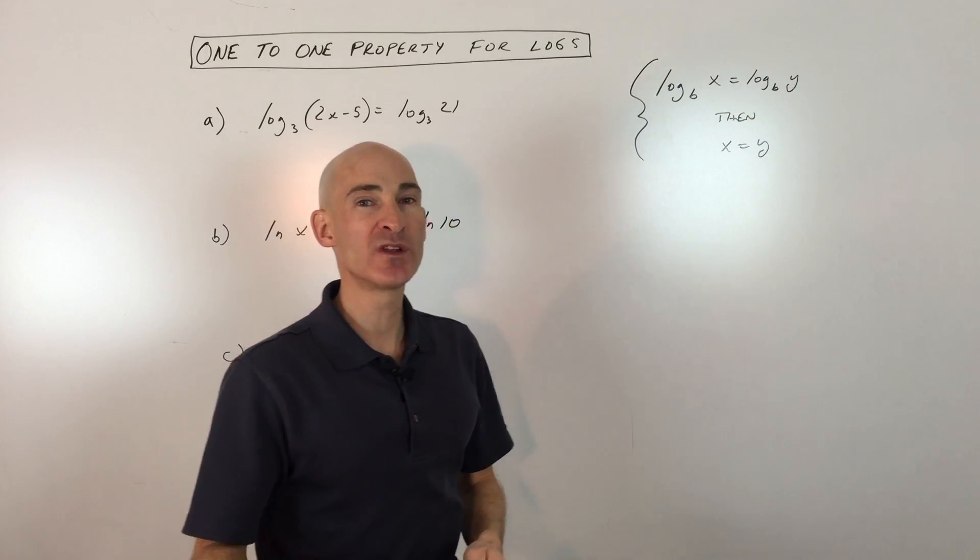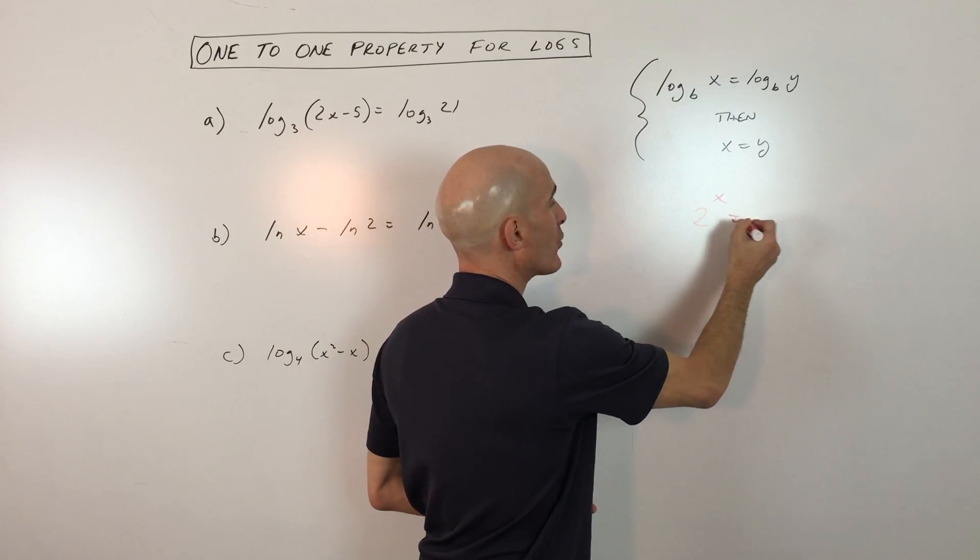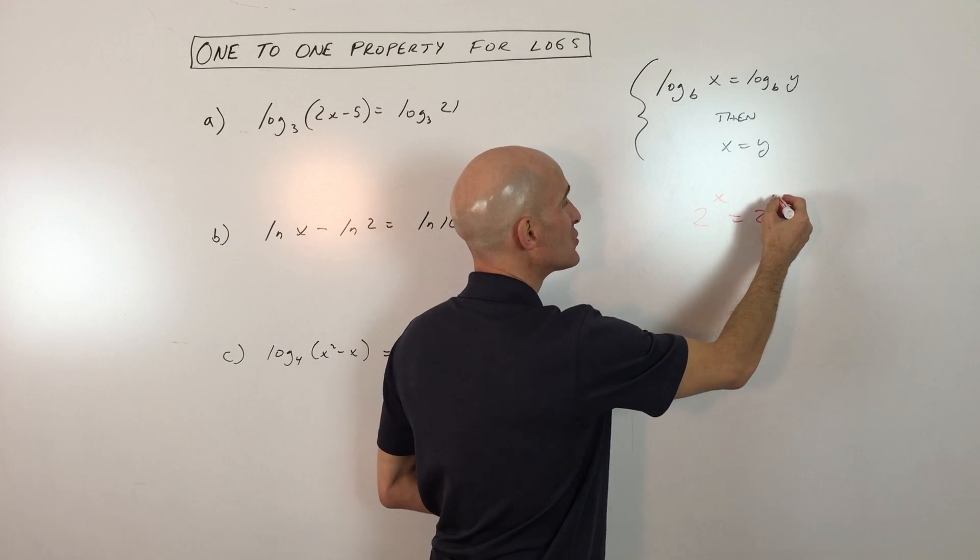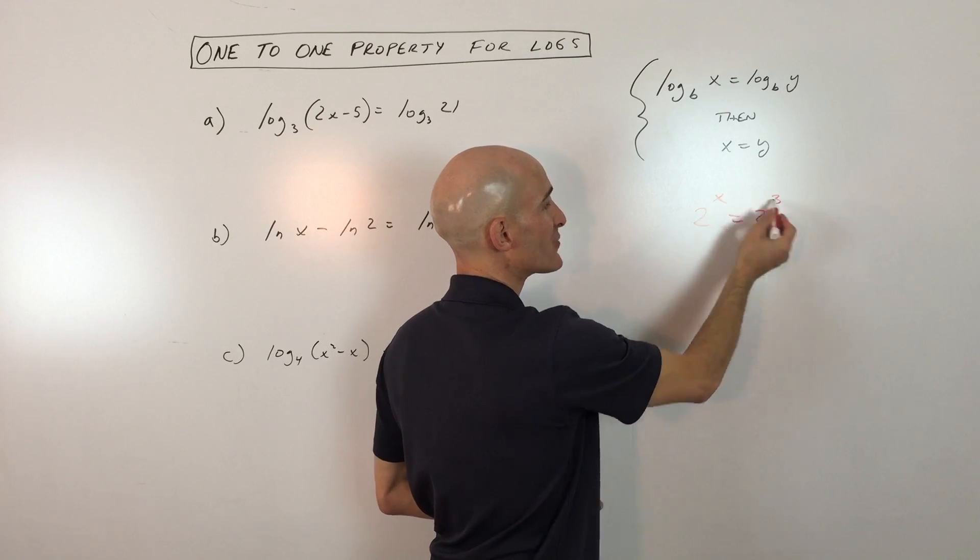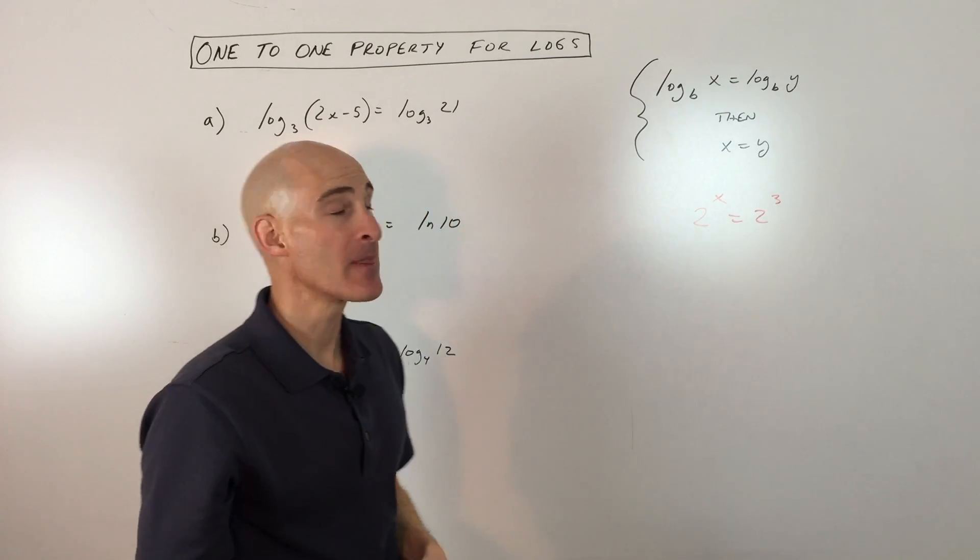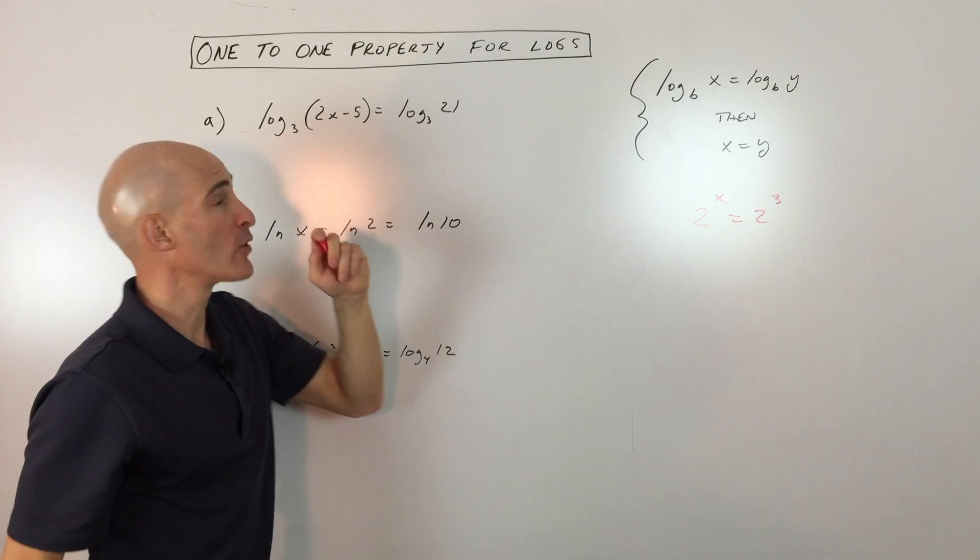It's very similar to what we did when we talked about the one-to-one property for exponents. If you have two to the x equals two cubed, you can see these bases are the same, so x must equal three. It's very similar for the one-to-one property for logs.